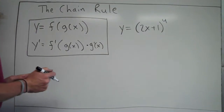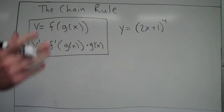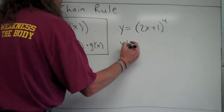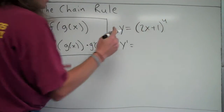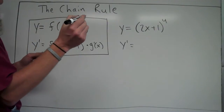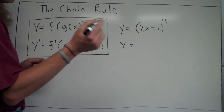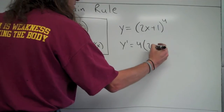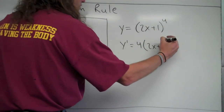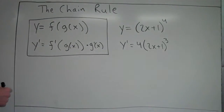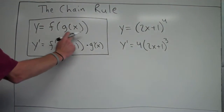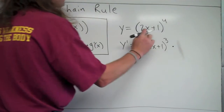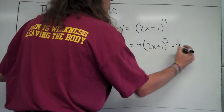Applying this to (2x+1)^4: the outer function is the to-the-fourth-power part, so we start with that when taking the derivative. I'm going to bring the 4 down in front using the power rule, just like if you had x to the fourth — bring the 4 down, subtract 1 from the exponent. So the 4 comes down to the front, the inner function remains the same, the exponent becomes 3, and now at the end I have to multiply by the derivative of the inner function, 2x plus 1, which is 2.